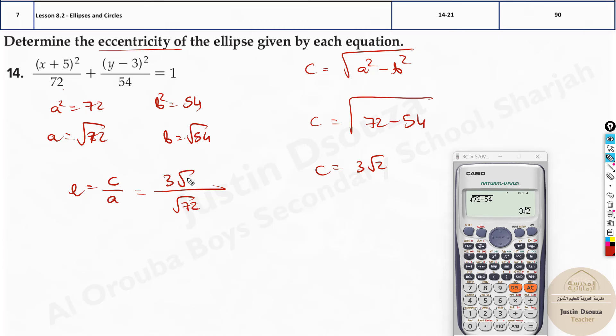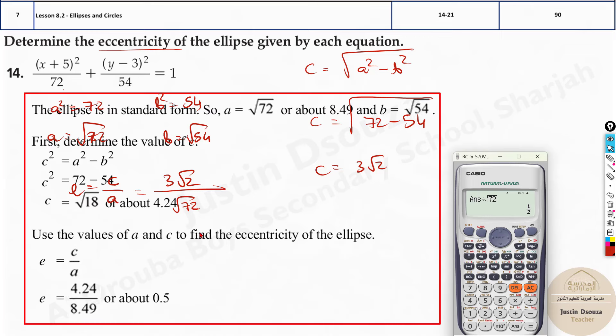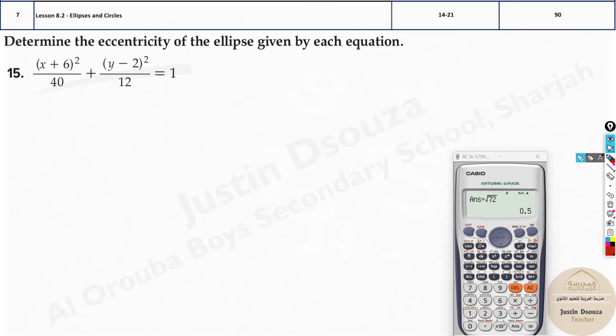You can take the decimal point as well, but it's better to take the exact value. You'll get the exact answer. Over here also it's 3 root 2. So now this divided by root 72 gives us the answer, that is half. You can see over here they have taken decimal values. Still you're going to get the same answer. But here you get the exact value of half.